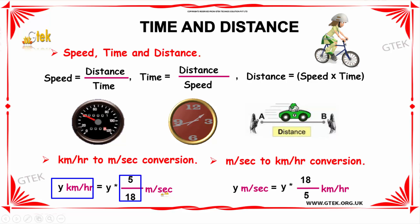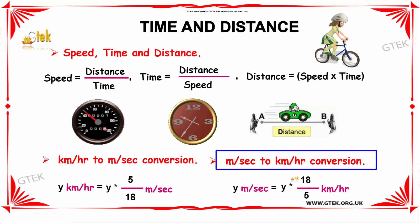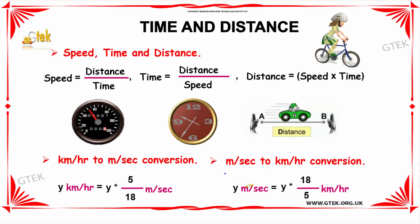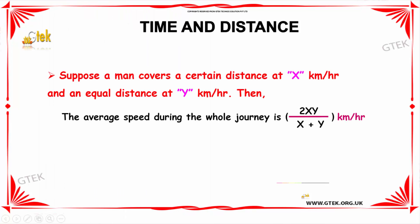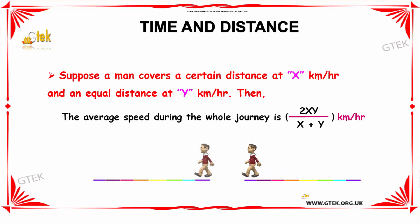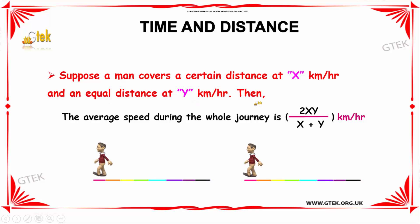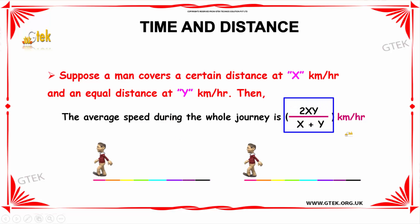Similarly, in order to convert m per second to km per hour, we need to multiply by 18/5 along with the given value. For example, if y meter per second is given, the result is y × 18/5 km per hour. Suppose a man covers a certain distance at x km per hour and an equal distance at y km per hour. Then the average speed during the whole journey is 2xy divided by (x + y) km per hour.